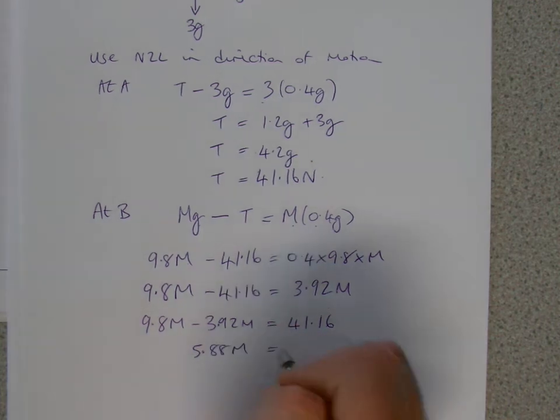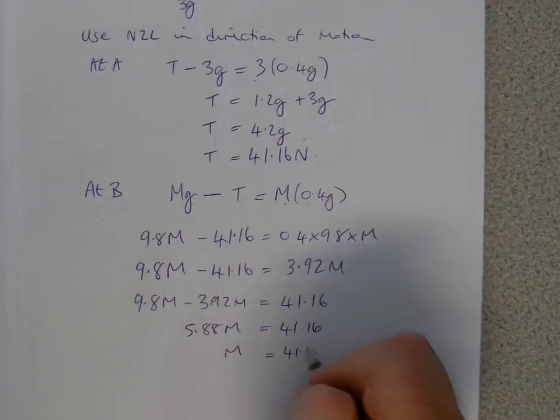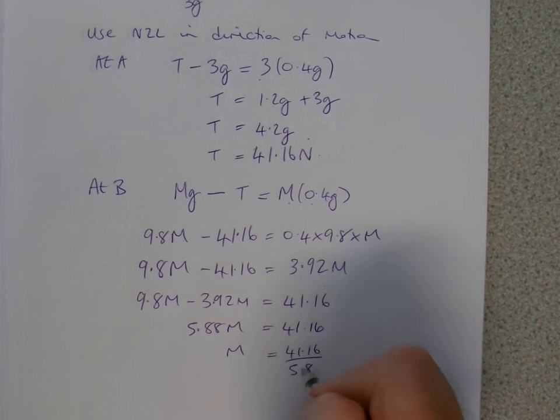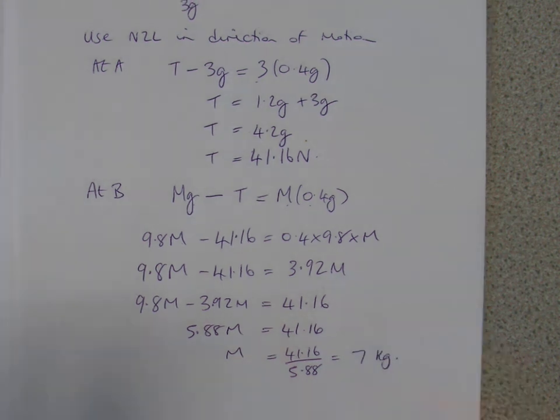5.88M equals 41.16, and of course to get M, then all you've got to do is divide by the 5.88, and we get our answer, which is just 7, so 7 kilograms.